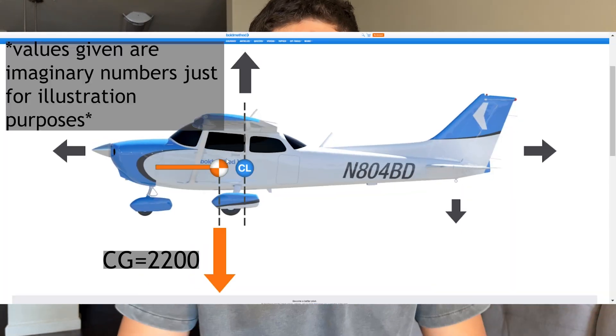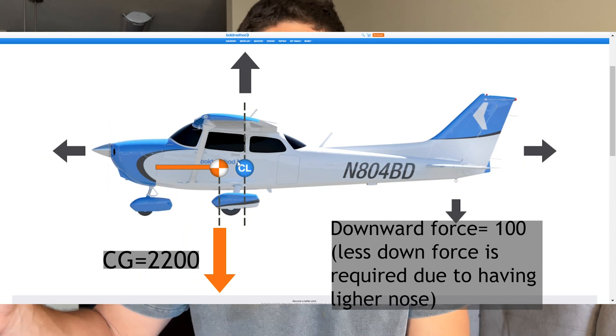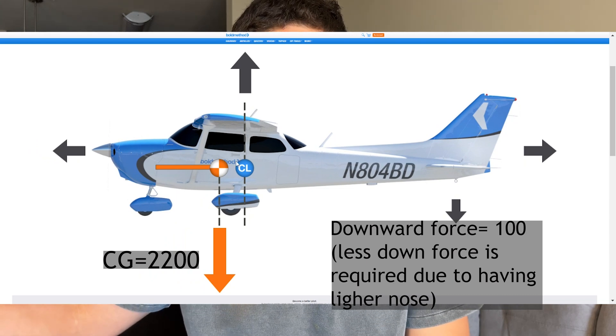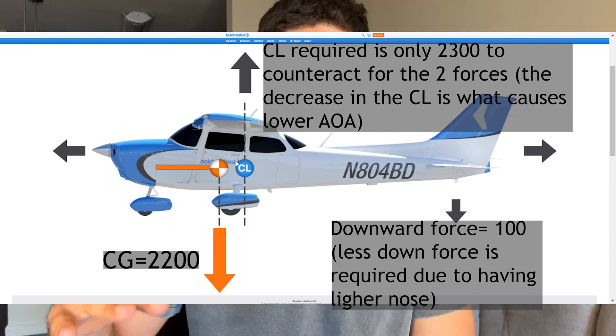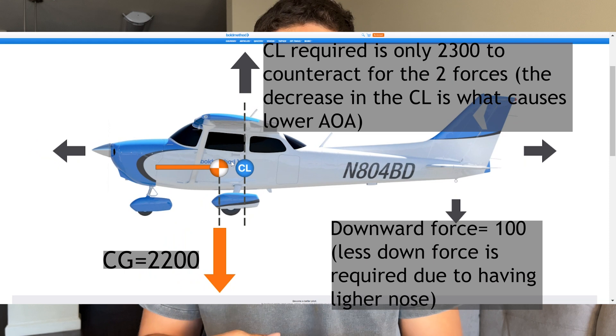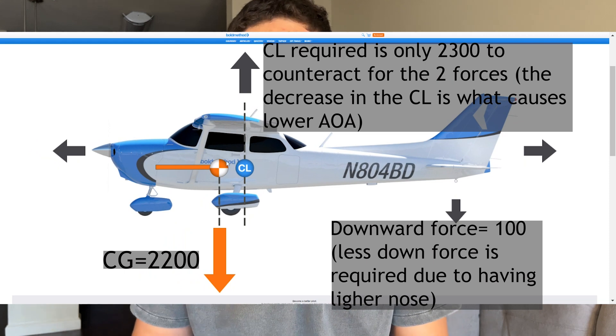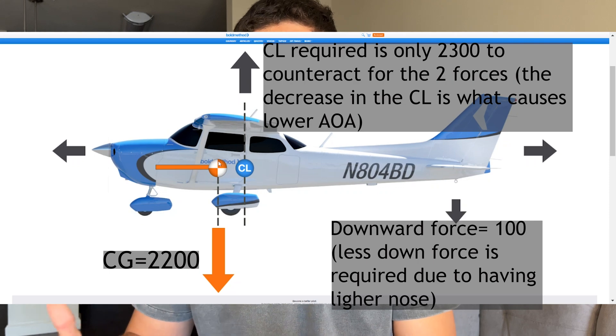The opposite is true for aft CG: less weight on the nose means less nose-down tendencies, less downward force from the horizontal stabilizer, less center of lift required, and therefore a lower angle of attack. A lower angle of attack means higher cruising speed, and being farther away from the critical angle of attack means a lower stall speed as well.